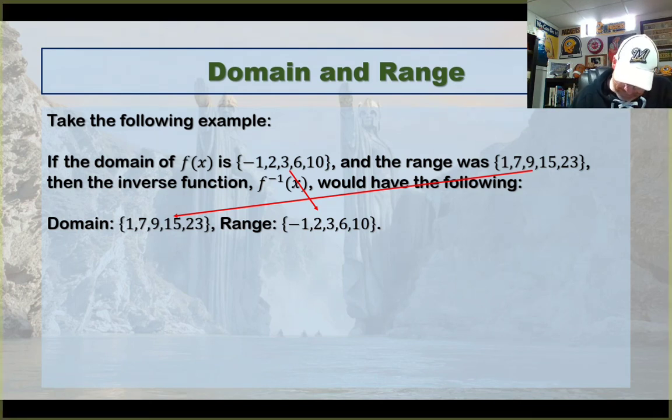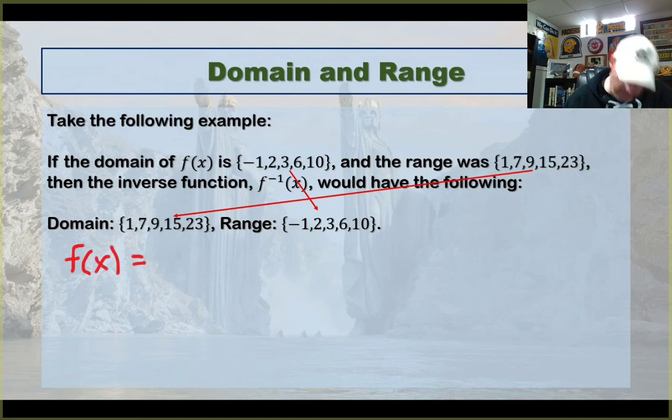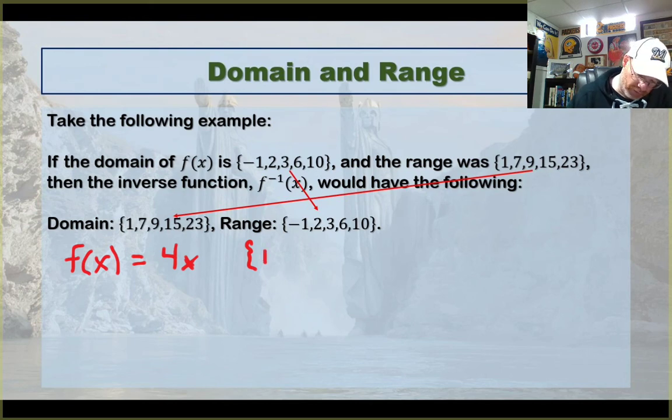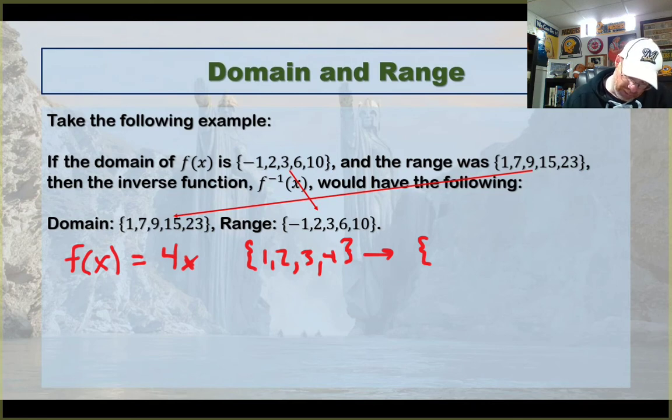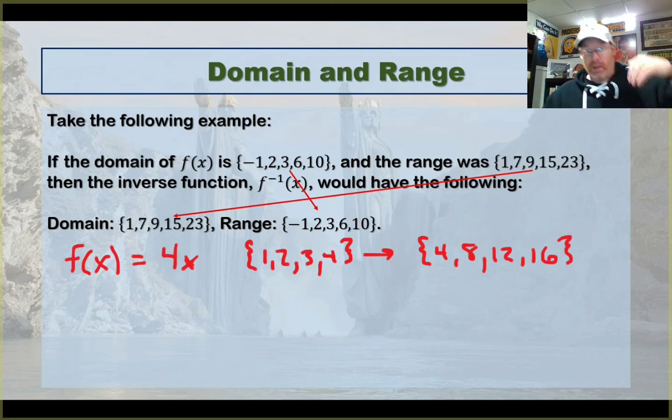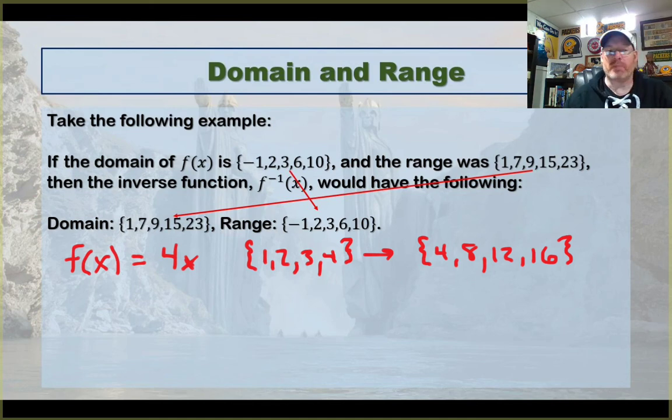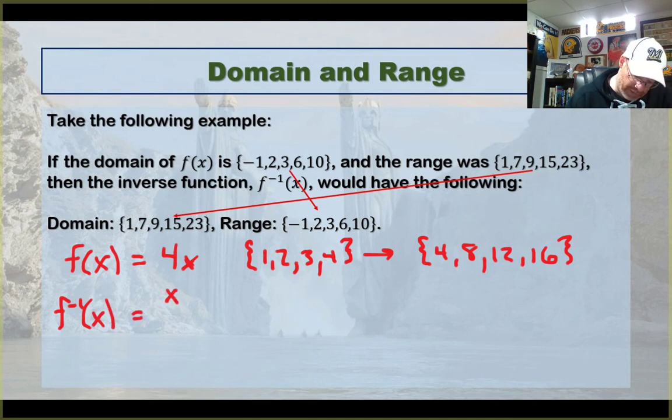I'm going to give you two functions here. I'm going to give you f(x), and I'm just going to say that it's 4x, 4 times x. And I'm going to tell you that the domain is 1, 2, 3, 4. And then obviously, the range would be 4, 8, 12, 16. The inverse undoes it. What's the opposite of multiplying by 4? The opposite is dividing by 4. So our inverse function is x divided by 4.